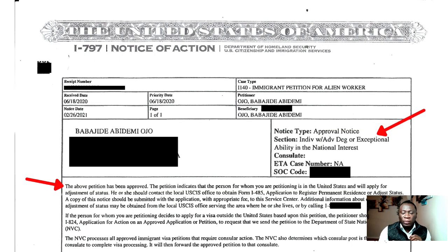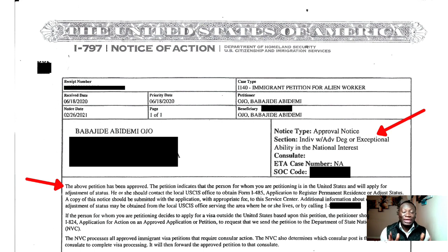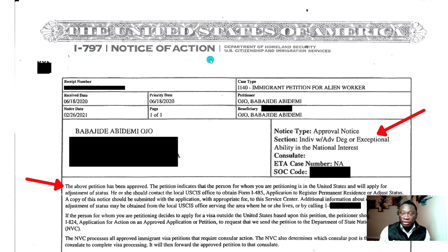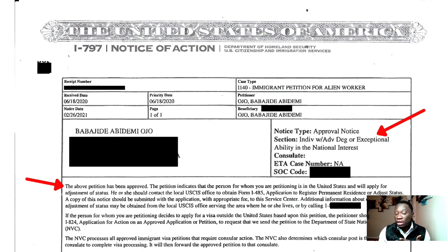Whenever you file any petition with the government, you are going to get what is called an I-797 Notice of Action form back from the government, which will tell you if your petition has been approved or denied.